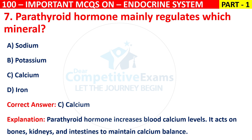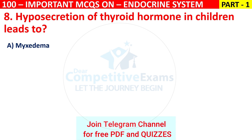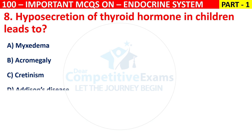Q8. Hypersecretion of thyroid hormone in children leads to: myxedema, acromegaly, cretinism, or Addison's disease.